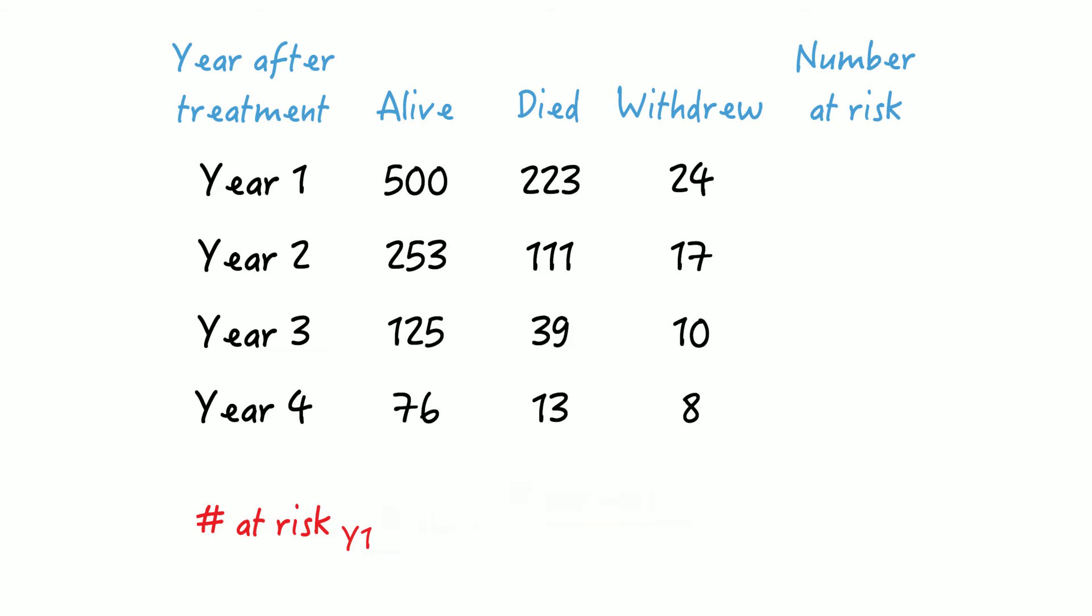For the first year, that would be 500 minus 24 divided by 2, or 500 minus 12, and that equals 488. Please stop the video and make the calculations for year 2 to 4 yourself, and then come back.